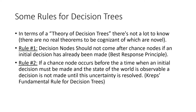We want to have a decision node followed by chance nodes. The second rule is that if a chance node occurs before the time when an initial decision must be made and the state of the world is observable, the decision is not made until the certainty is resolved. This comes from David Kreps's Course in Microeconomic Theory and is called the Fundamental Rule of Decision Trees. That means no decision on your decision tree is made until the state of nature is known.